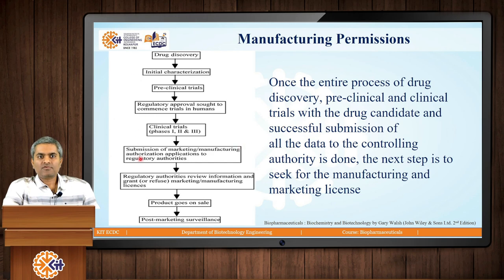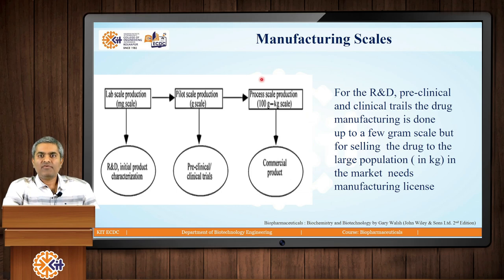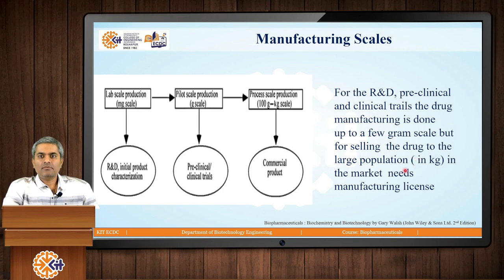Considering all these steps of the drug development cycle, once the entire process of drug discovery, pre-clinical and clinical trials with the drug candidate, and the successful submission of all the data to the controlling authority is done, the next step is to seek the manufacturing and marketing license. For R&D, pre-clinical and clinical trials, manufacturing is done up to only a few grams. But for commercialization and selling the drug to the large market population, we need to produce the drug in kilograms, and that requires the manufacturing license.